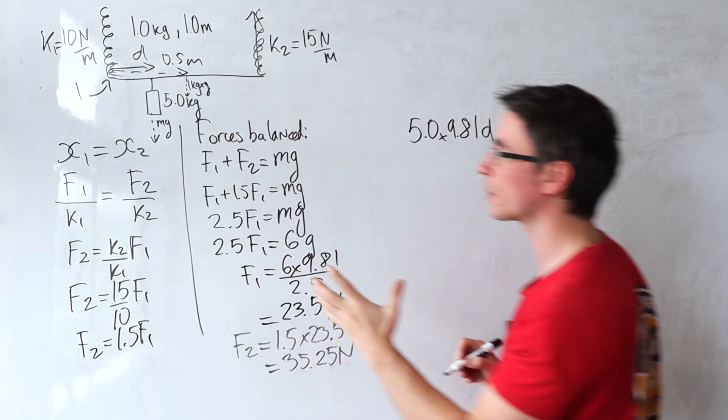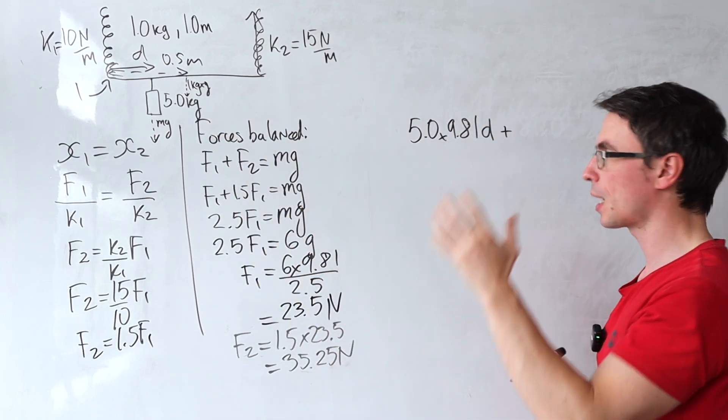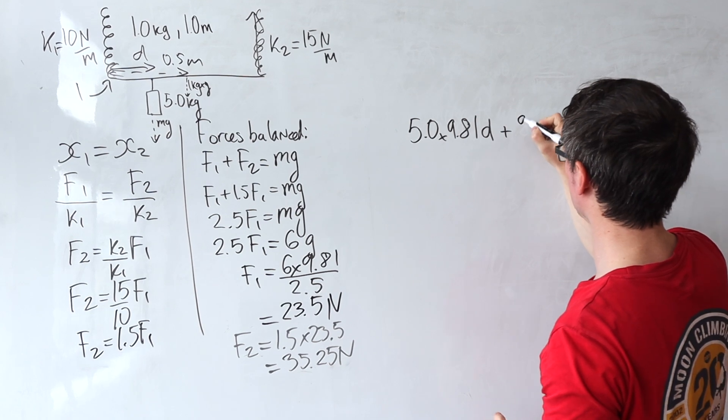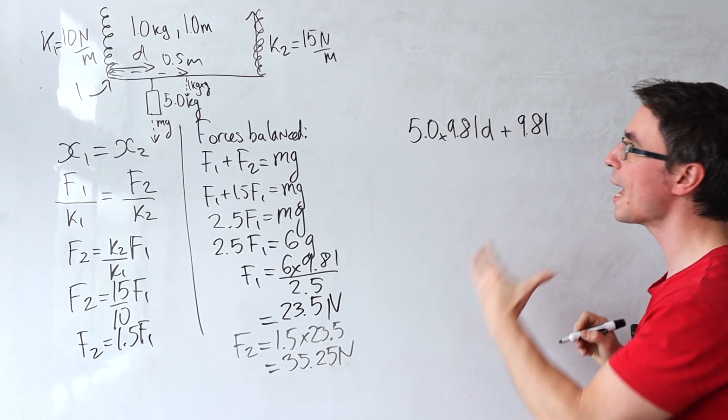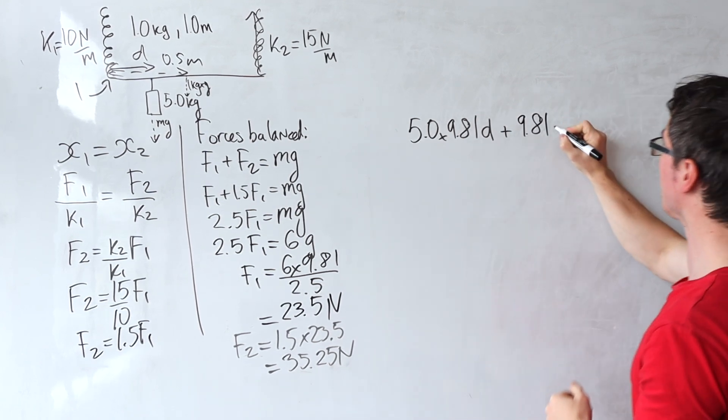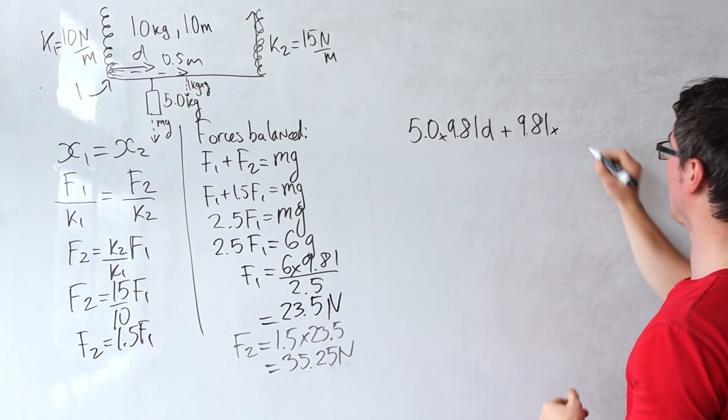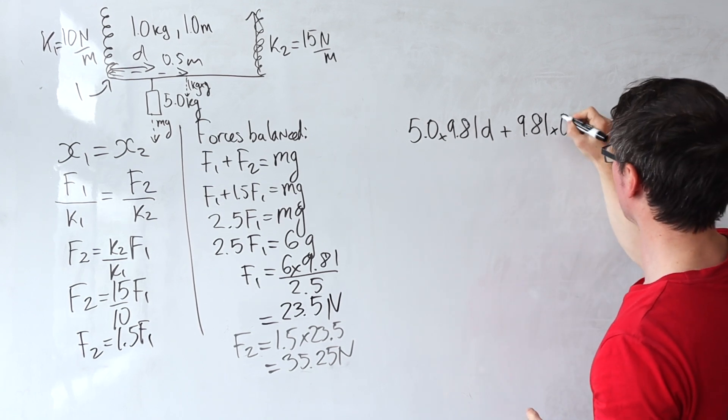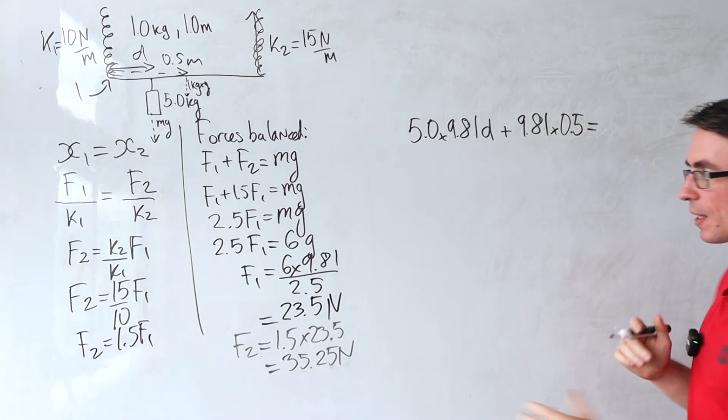Then we're also going to have the 1 kilogram times 9.81 acting at a distance of half of the length, which is 0.5.